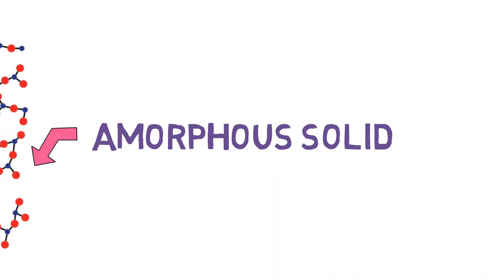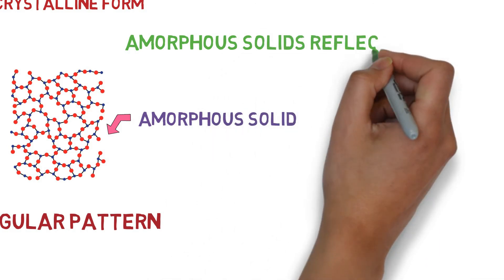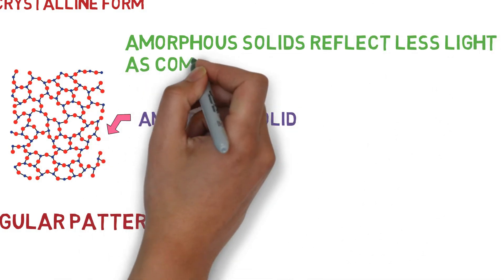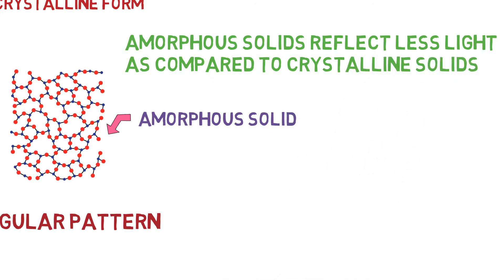This irregular pattern gives the glass a special property. Amorphous solids reflect less light as compared to crystalline solids, so it allows the light to pass right through the glass without reflecting.